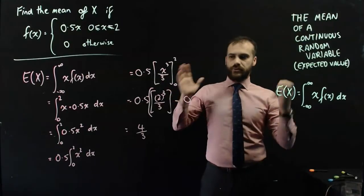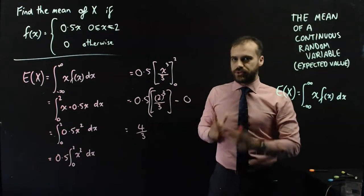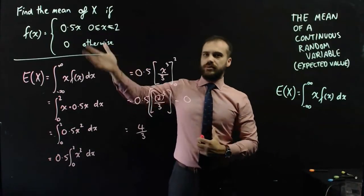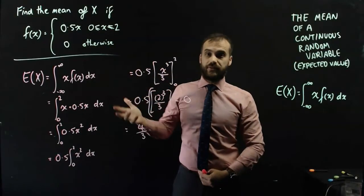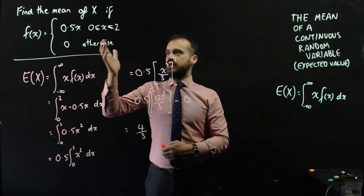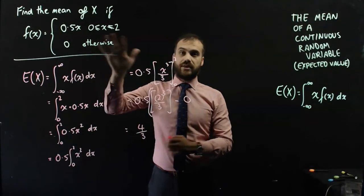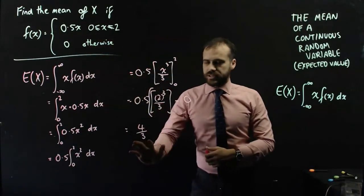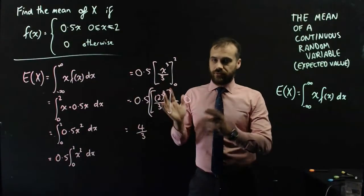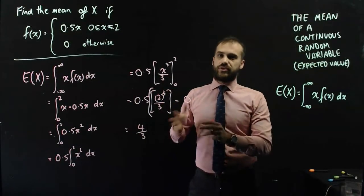Okay, now, what does that represent? Well, something was happening, something has a probability of happening, and you would expect, so you can get a score between 0 and 2 when that thing happens. You would expect 4 over 3 to be the thing that happens.